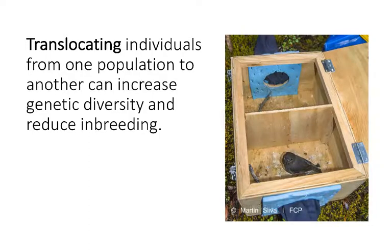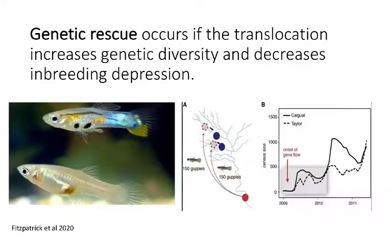This picture here is one example of a bird that is being translocated, moved to a new population. If we've moved individuals, we can say that leads to this process of genetic rescue if that translocation increases genetic diversity and also decreases inbreeding depression.